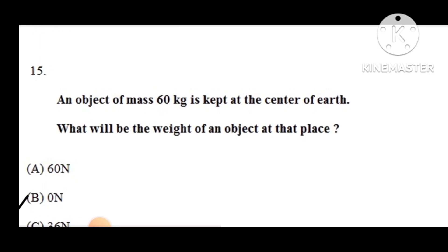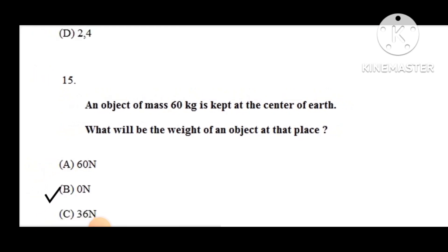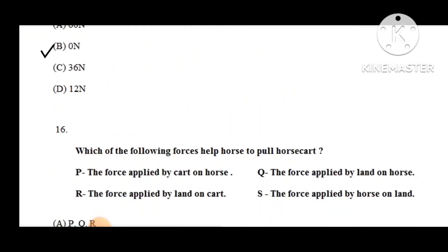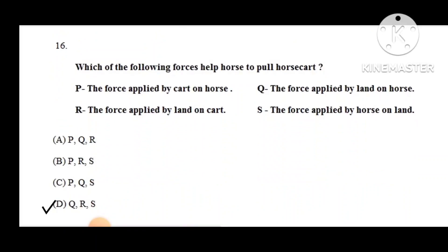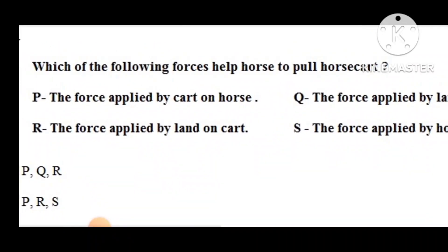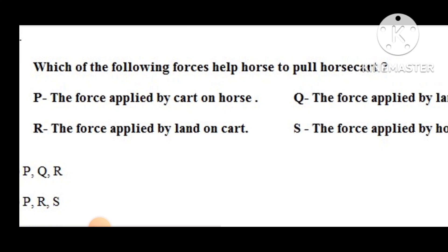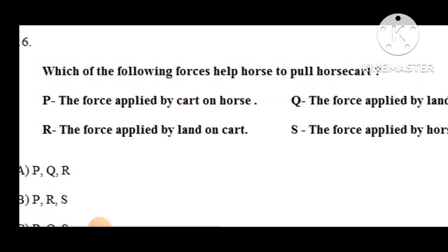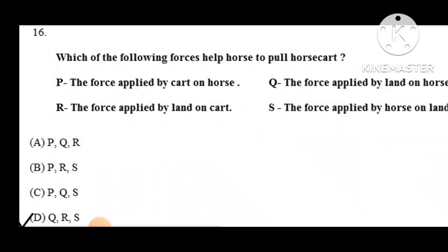Question number 15: An object of mass 60 kg is kept at the center of the Earth. What will be the weight of the object at that place? The correct answer is zero Newton.